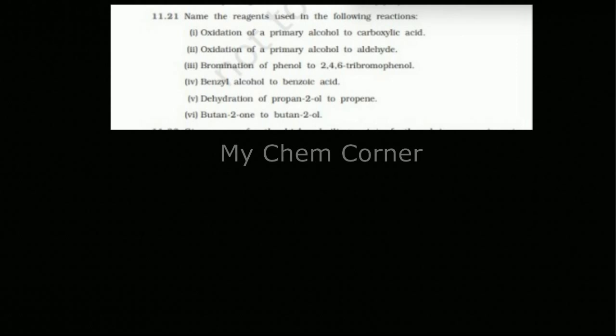So the first one is oxidation of a primary alcohol to a carboxylic acid. Now whenever you take an alcohol and try to do oxidation, it normally goes to an aldehyde unless you use a very strong reagent for oxidation. It does not really go to carboxylic acid. Which means to say that in this case we need to use a very strong oxidative reagent for oxidation for it to go from a primary alcohol to a carboxylic acid.